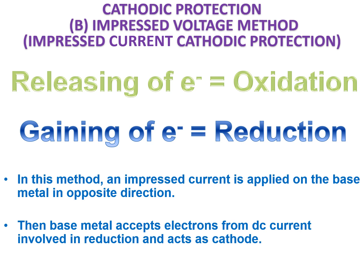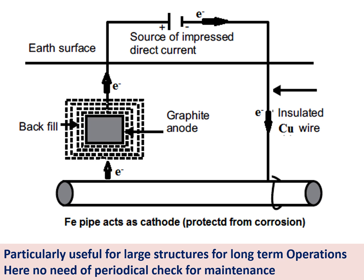We know that releasing electrons equals oxidation, and gaining electrons equals reduction. In the previous method, magnesium or zinc released electrons and were involved in oxidation, while the base metal iron accepted electrons and was involved in reduction. In the impressed voltage method, instead of magnesium or zinc providing electrons, we use an external battery or DC power source. We connect the base metal to the negative terminal of the battery.